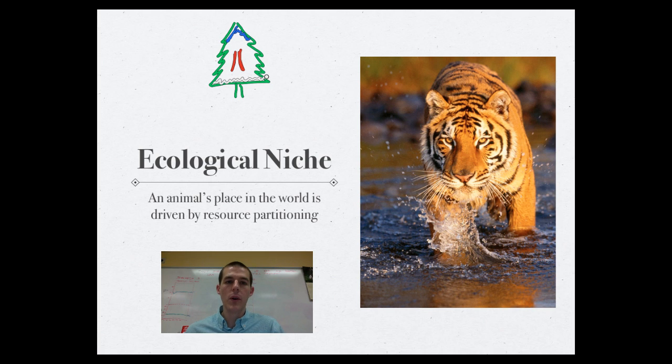And species C may hang out here in the bottom region of the tree. So that would be resource partitioning, where you have one resource space in the tree, and three species figuring out how to use it to where everybody gets what they need. So that's an example of resource partitioning.